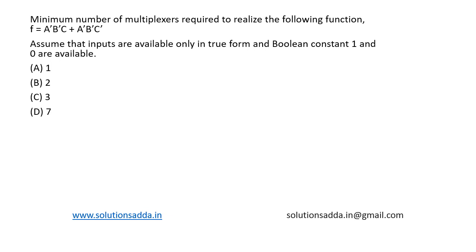This is a question from digital logic design. Find the minimum number of multiplexers required to realize the following function: f = A'B'C + A'B'C'. Assume that inputs are available only in true form and Boolean constants 1 and 0 are available.